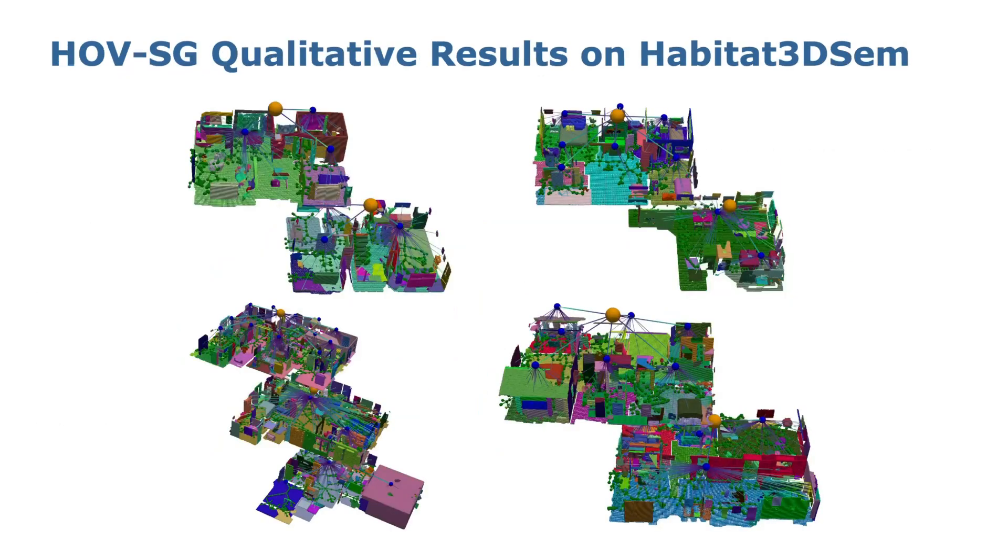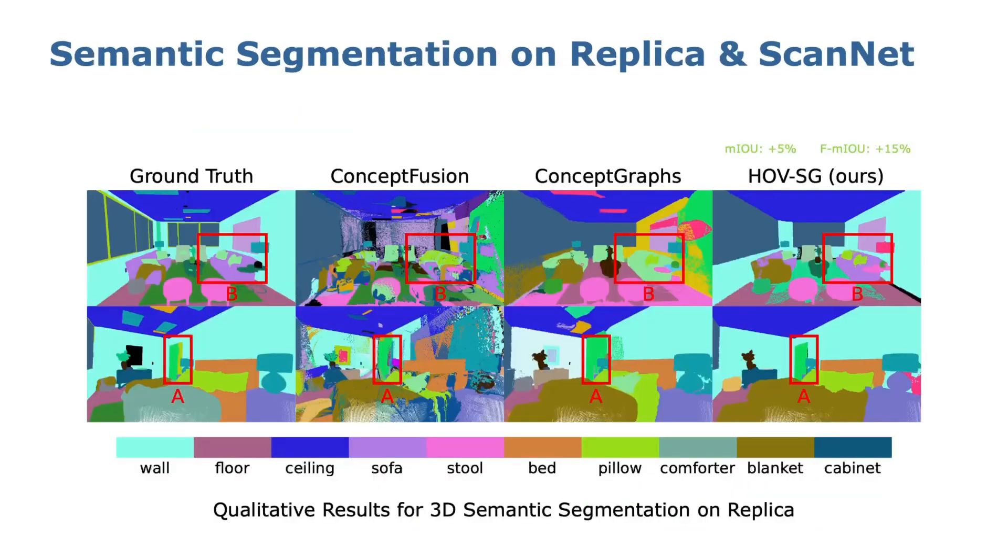Here are some detailed views of the created scene graphs for multiple scenes on Habitat 3D Semantic dataset. HofSG outperforms the baseline in 3D semantic segmentation on both Replica and ScanNet. Here are some qualitative results for Replica.